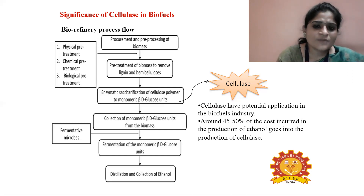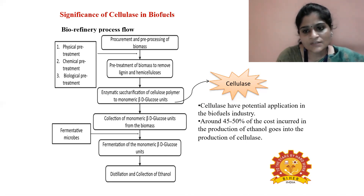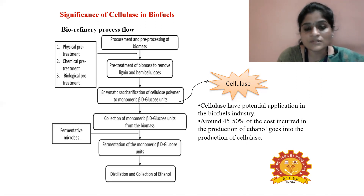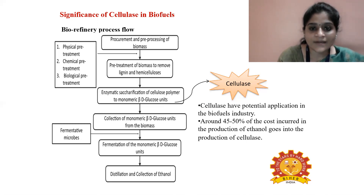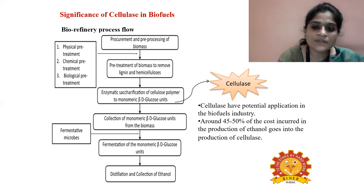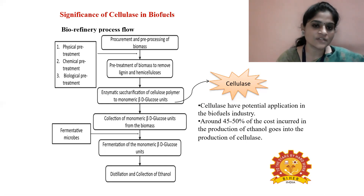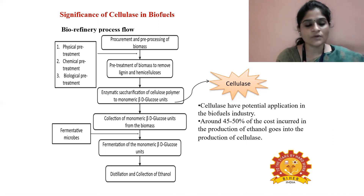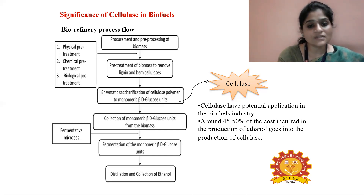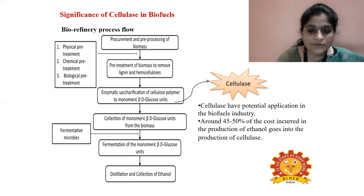The biofuel industry focuses heavily on cellulase enzyme because of its potential to convert cellulose into individual glucose units. Moreover, industries invest around 45 to 50 percent of the total ethanol production cost on producing this enzyme alone. The enzyme is produced using a fermentation process with native or wild strains, which we covered in the previous class.